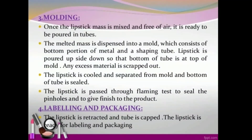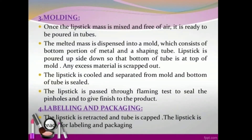Third, molding. Once the lipstick mass is mixed and free of air, it is ready to be poured into tubes. The melted mass is dispensed into a mold which consists of a bottom portion of metal and a shaping tube. Lipstick is poured upside down so that the bottom of the tube is at the top of the mold. Any excess material is scraped out. The lipstick is cooled and separated from the mold, and the bottom of the tube is sealed.